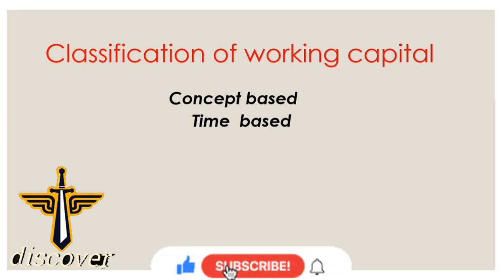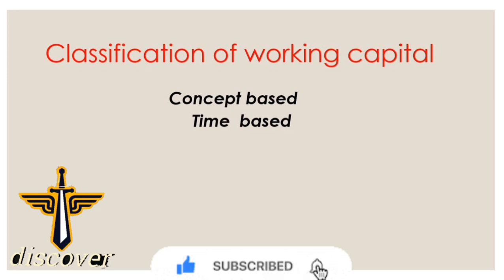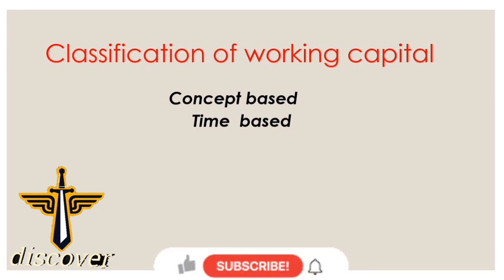In concept-based classification we have two types: gross working capital and net working capital. Gross working capital simply means the sum of all current assets. Net working capital means current assets minus current liabilities.